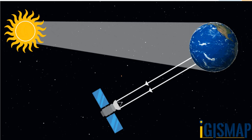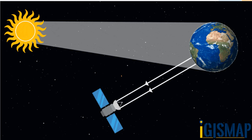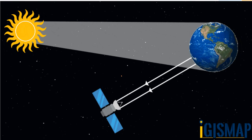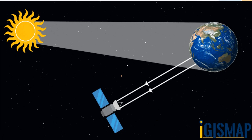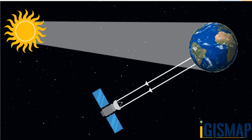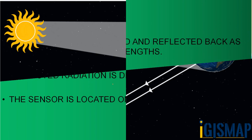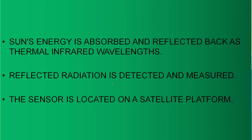In the 1990s, a global remote sensing system was launched which can photograph any part of the earth at any time. In India, the first satellite — the Aryabhata — was launched on April 19, 1975, and now India has around 12 operational satellites. The sun is the prime source of energy. This energy is absorbed by objects and reflected back as thermal infrared wavelengths. The sensors located on a satellite platform detect and record this emitted energy or reflected radiation.